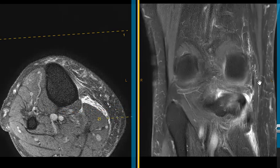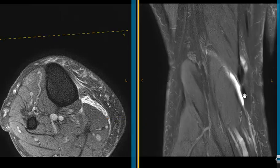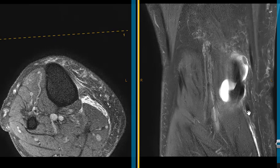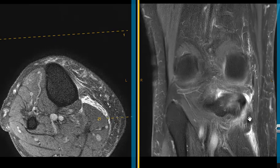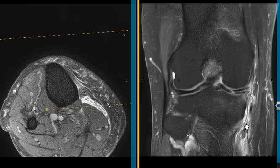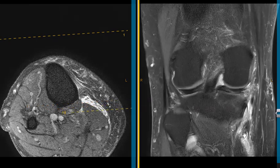It's a tear of a tendon called the semi-tendinosis. The tendon we see is right back here. It comes down, and it's supposed to attach over here on the tibia, but instead it's balled up right here.